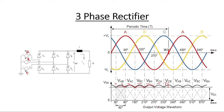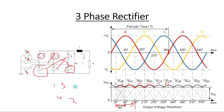One important thing to note: each thyristor conducts for 120 degrees of duration. The 60-degree segments combine to make 120 degrees for each thyristor. The time interval between one thyristor and the next is 60 degrees — if S1 conducts, after 60 degrees S2 will conduct, then S3 after 60 degrees of S2, then S4, S5, S6, operating in sequence: one, two, three, four, five, six.